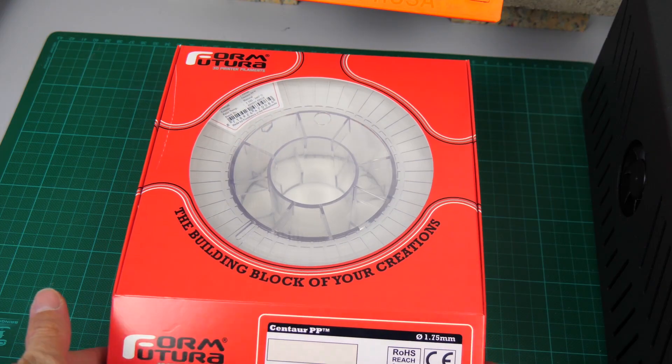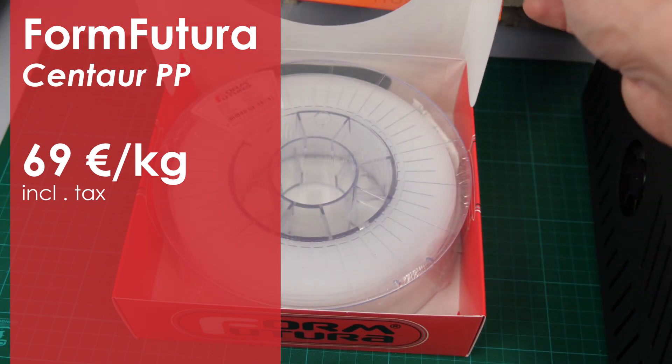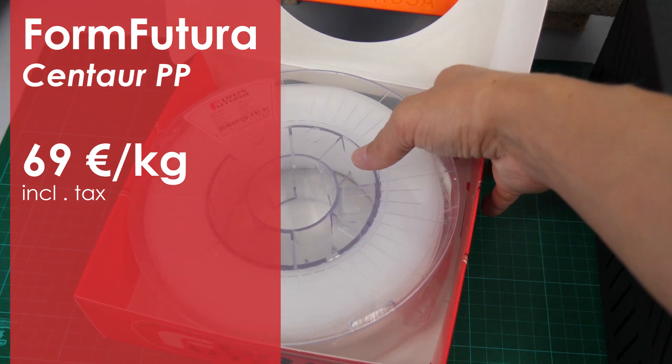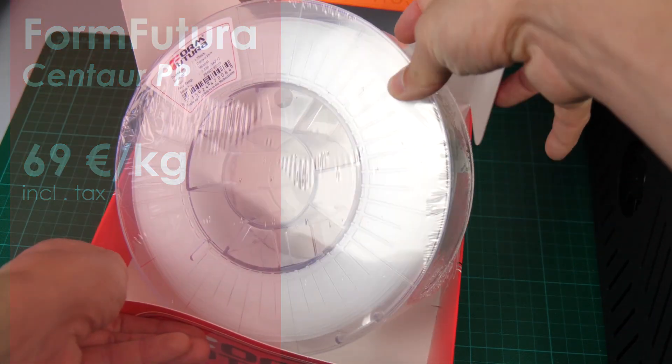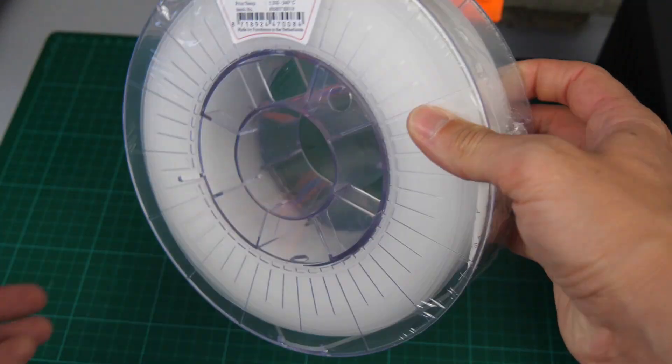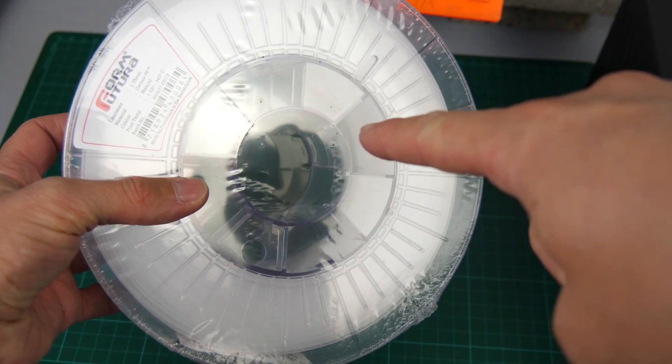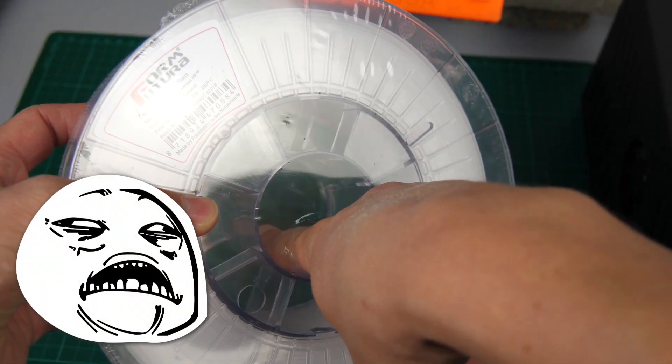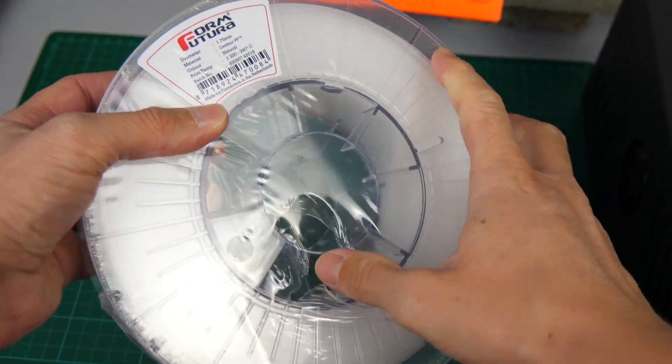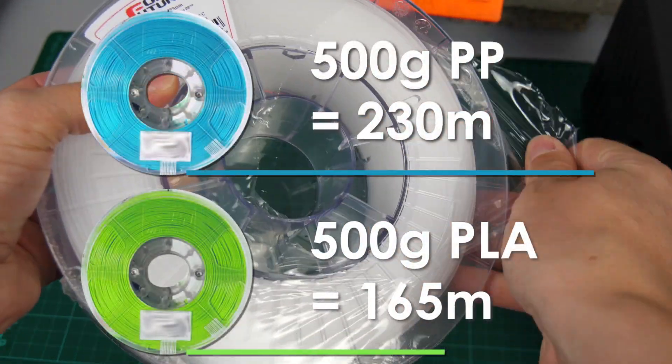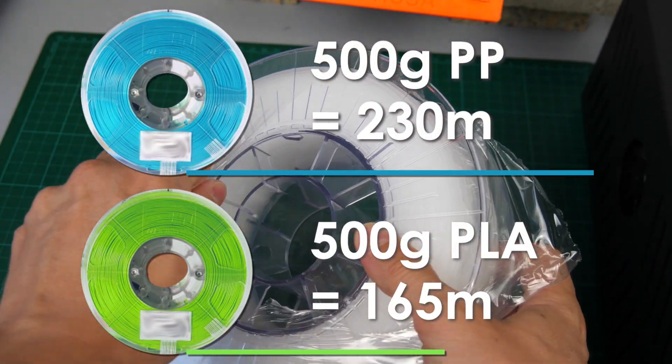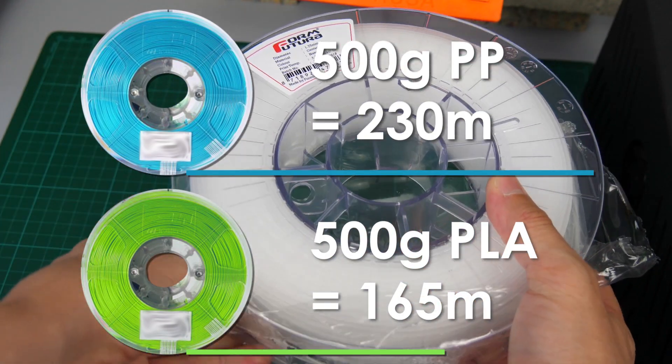It comes on 500g rolls that sell for around 34€ including tax, which makes it not the cheapest material at almost 70€ a kilogram. But due to its very low density of 0.9g per cubic centimeter, a 500g roll of filament will let you print around 40% longer than a 500g roll of PLA, which makes the price more reasonable.